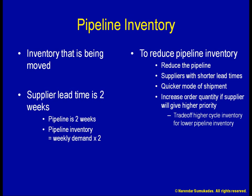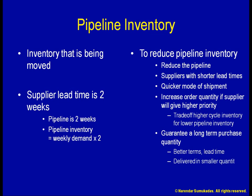To make my order more attractive to the supplier, instead of increasing the order quantity, I might be able to enter into a long-term relationship. How about I guarantee the supplier a certain quantity of purchase over the year? My order is now attractive enough for the supplier to offer me better terms and quicker lead times. However, I just don't want the whole year's worth delivered all at once — that would increase my cycle inventory. I'd like the deliveries done in smaller quantities.